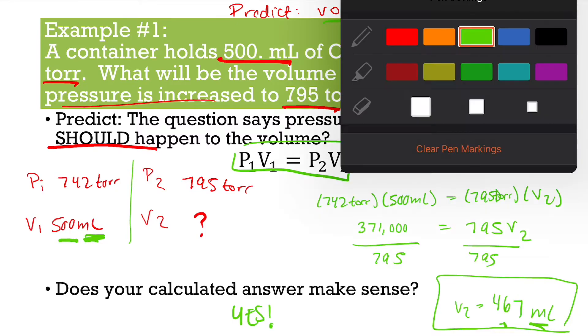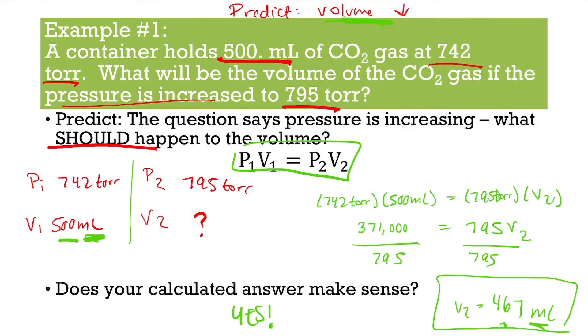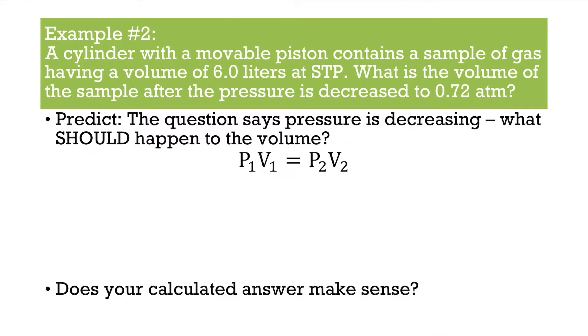You also see if we are tracking the units. We have torr times mL. This is just torr. So when you divide it, all of your units cancel, again, except for what you're looking for.